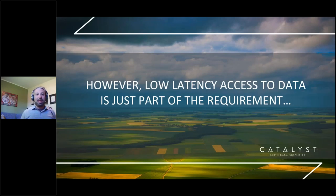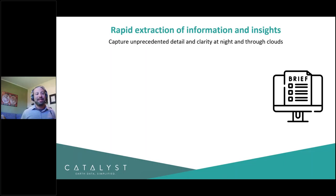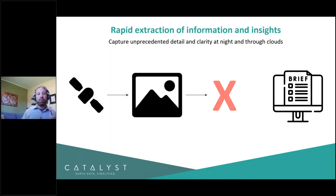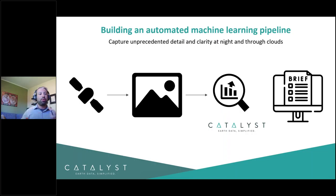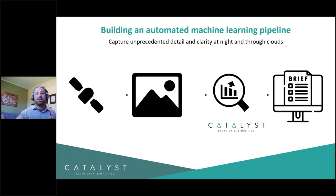Low latency access to data is important, but it's really just one part of the overall requirements. If our ultimate goal is to create a brief and get intelligence into the hands of decision makers, simply stopping at tasking and acquisition is missing an important piece. This is where Catalyst comes in — we can work with data sources such as Capella to complete and automate as much of the workflow as possible, using our machine learning capabilities to extract information in a more automated process.